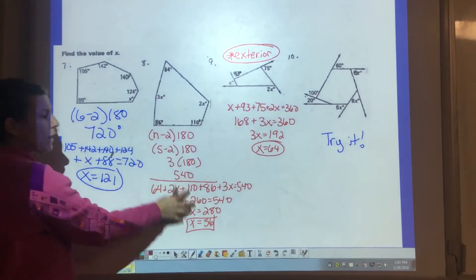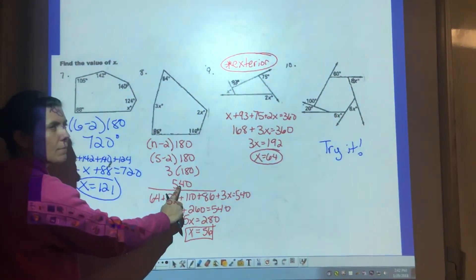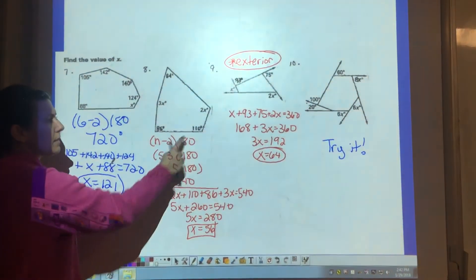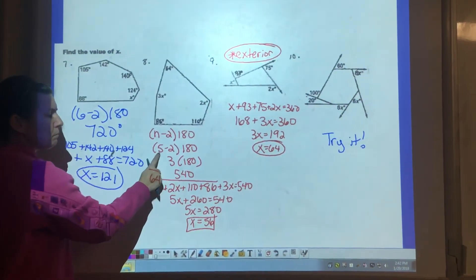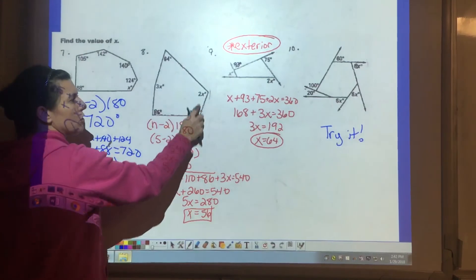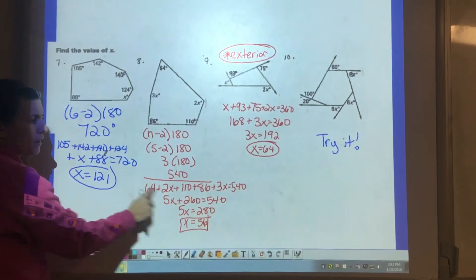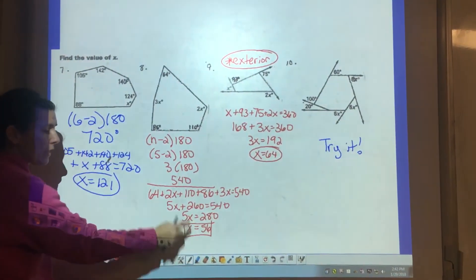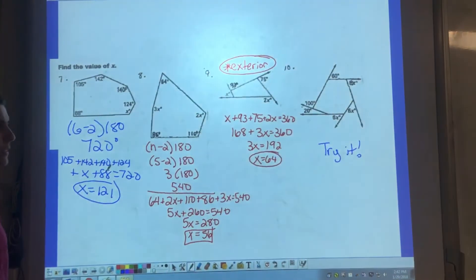Very similar idea for number eight. You have to find out the sum of the measures of those interior angles, and this time we have five of them. The sum has to be 540. I set up my equation using all of these numbers and set it equal to 540 because they must add to 540. And I found out that x is 56.